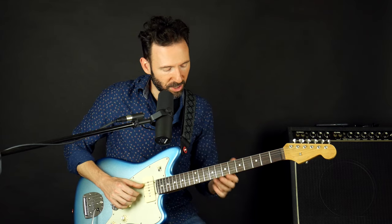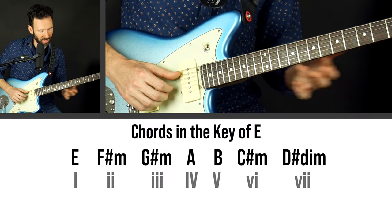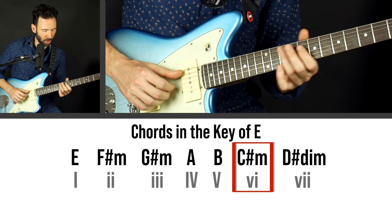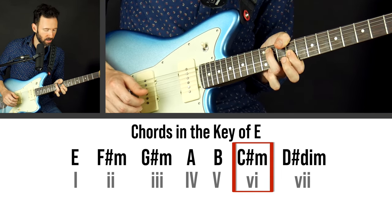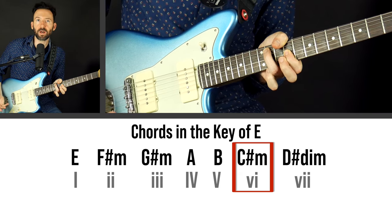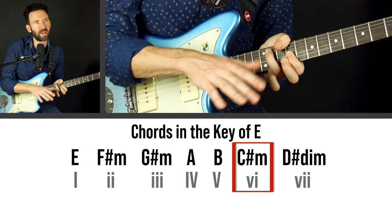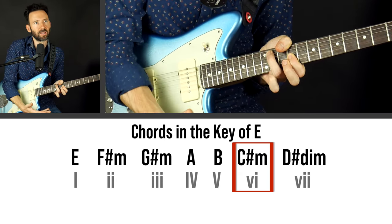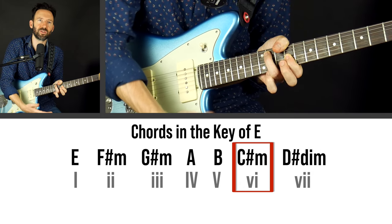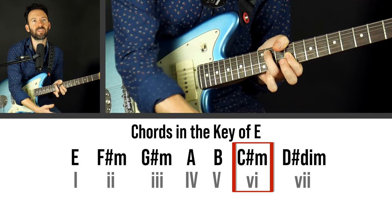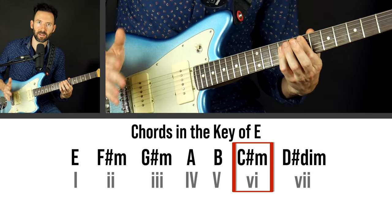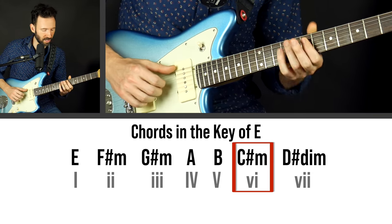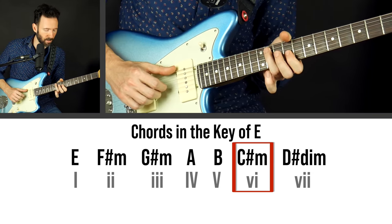So the chord progression here is a 6-4-1. In the key of E, we have C-sharp minor - that's 6, which is the relative minor of E. So this song kind of has a vibe of being in C-sharp minor, but it's actually in E. It resolves to E. Slow dancing in a burning room - it definitely resolves on E, but it's got that C-sharp minor vibe.